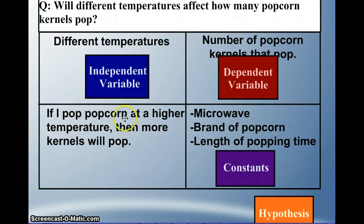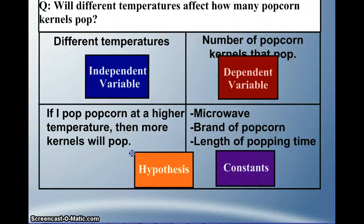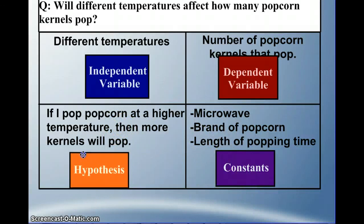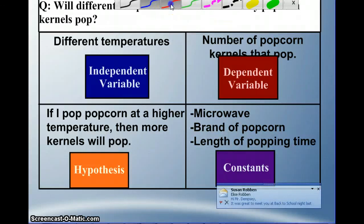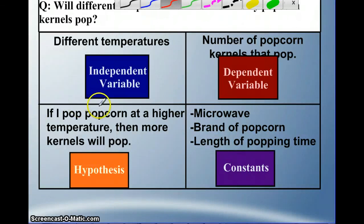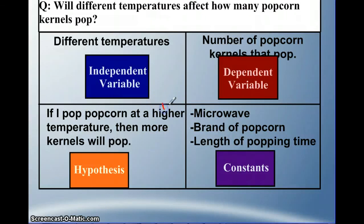If popcorn is at a higher temperature, then more kernels will pop — this is our hypothesis. We can identify our independent and dependent variable in that hypothesis: here is our independent variable, and here is our dependent variable.